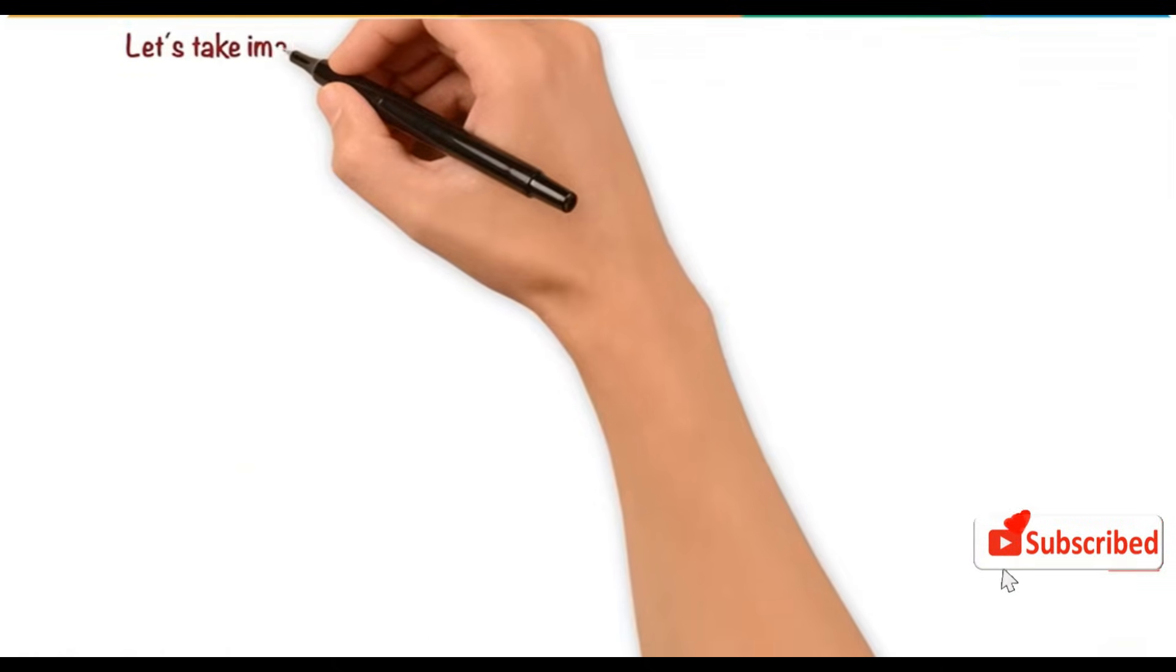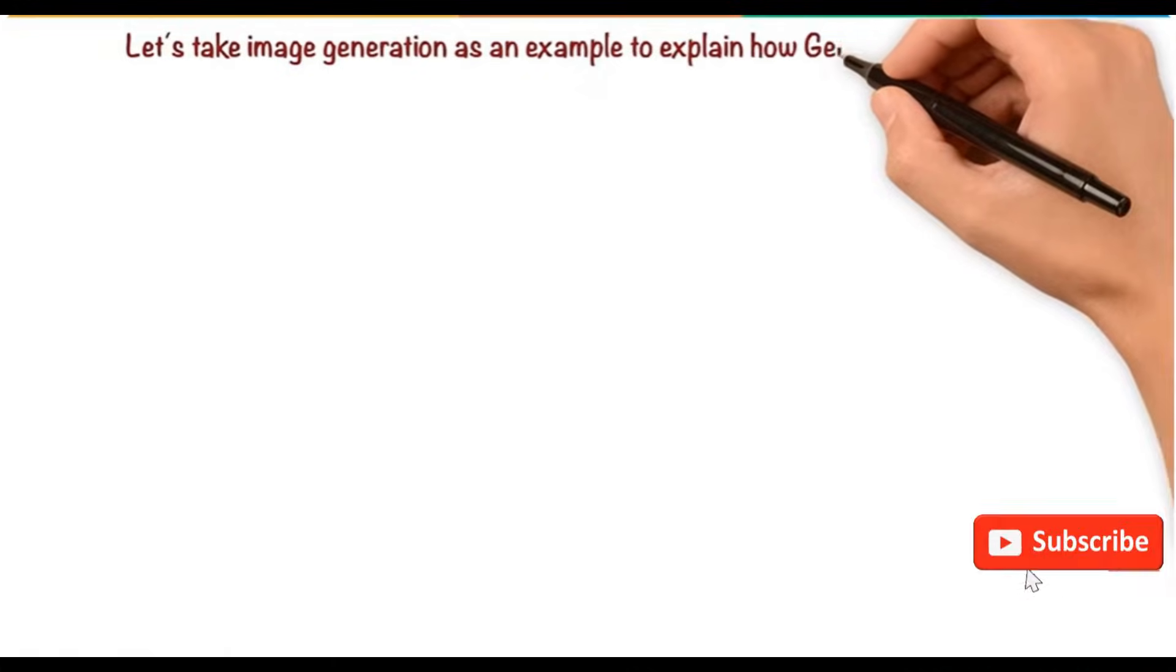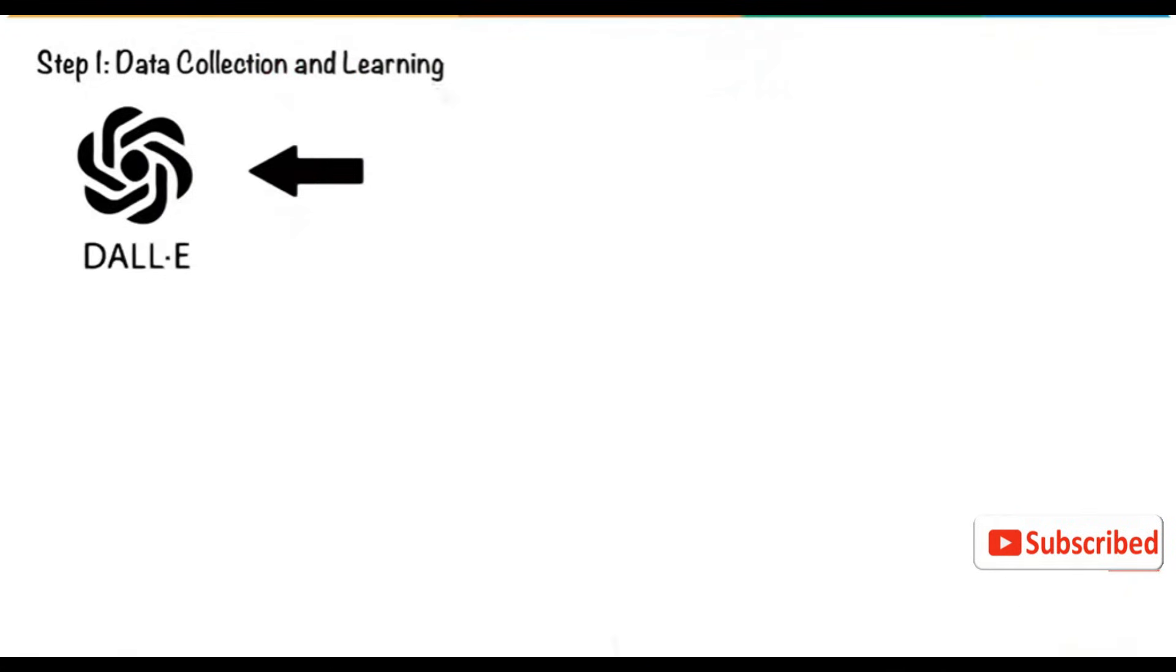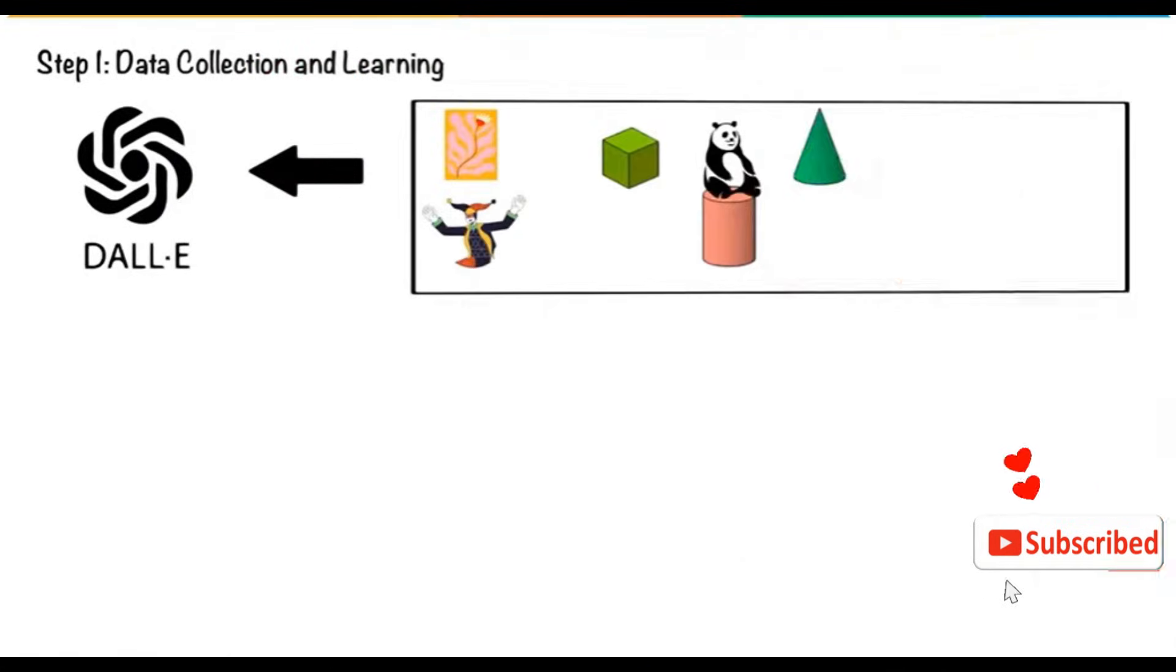Let's take image generation as an example to explain how Generative AI works. Data collection and learning: AI models like DALI are trained on large data sets of images paired with text descriptions.